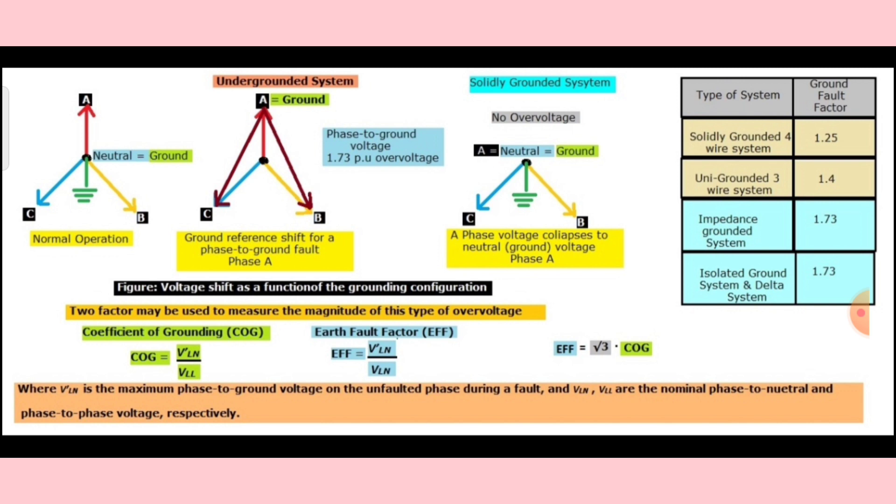What happens when there is a single phase to ground fault? If your system is effectively grounded, as shown in picture number one, there is usually no overvoltage, and that is because of the coefficient of grounding.